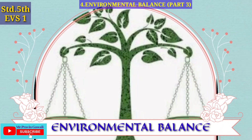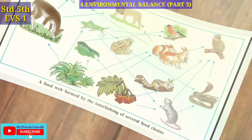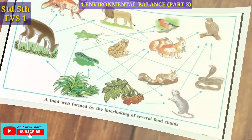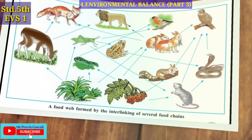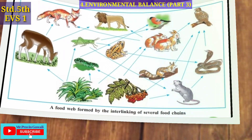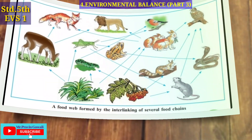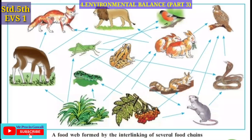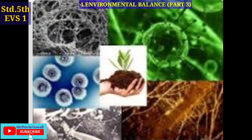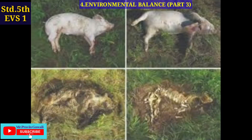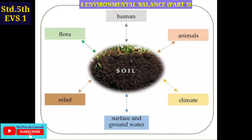There are many food chains in our environment. Because of these food chains, every living thing gets the food it needs and therefore continues to live. Microorganisms living in the soil help the process of decomposition of plant residue, dead animals, excreta, etc. As a result, substances that help the growth of plants are formed and added to the soil.